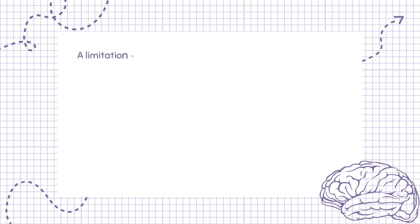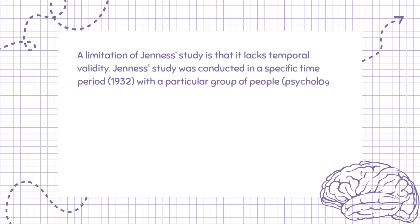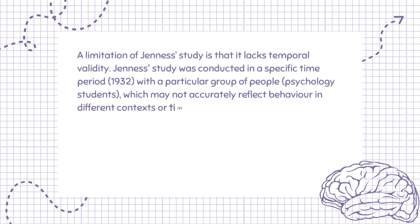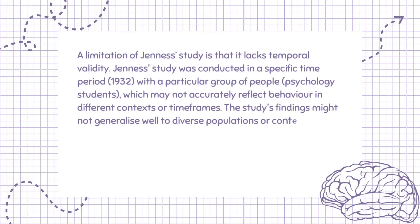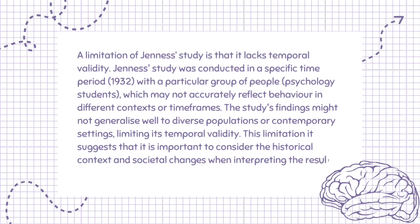A limitation of Jeunesse's study is that it lacks temporal validity. Jeunesse's study was conducted in a specific time period, 1932, with a particular group of people — psychology students — which may not accurately reflect behavior in different contexts or timeframes. The study's findings might not generalize well to diverse populations or contemporary settings, limiting its temporal validity. This is a limitation because it suggests that it is important to consider the historical context and societal changes when interpreting the results of psychological studies conducted in the past.